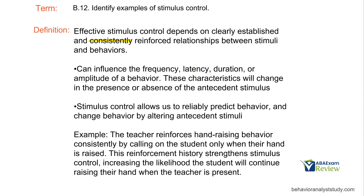We can influence frequency, latency, duration, amplitude, and magnitude — we can change all these characteristics if we establish stimulus control. We can make it happen more often, for a longer duration, or at a different intensity. All these characteristics can change in the presence of an antecedent stimulus that has or doesn't have stimulus control. Stimulus control allows us to reliably predict behavior. If you know that you can present a stimulus that will reliably evoke a behavior, you can make the decision on how you're going to reinforce or punish that behavior. If you know that saying a certain phrase is going to cause a certain behavior in your client, if you want that behavior to keep happening you'll produce reinforcement; if you want it to stop, you may produce punishment or extinction. Understanding what does and doesn't have stimulus control is super important.